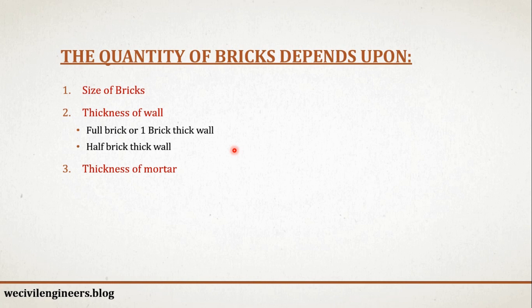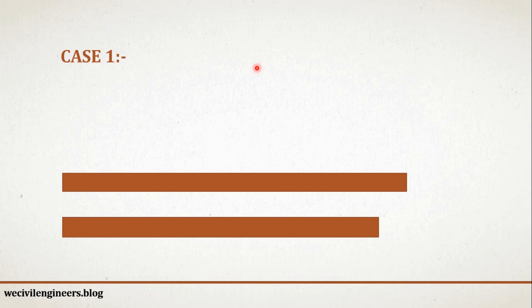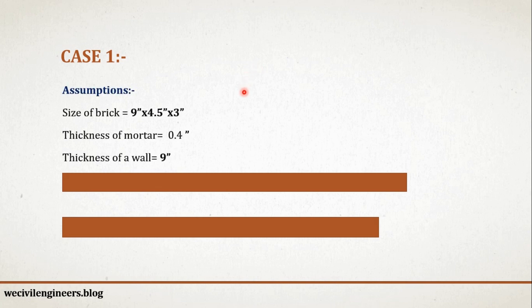Thickness of wall can be full brick thick or half brick thick. In this lecture, I am considering two cases. In case 1, I am taking the size of brick as 9 inch by 4.5 inch by 3 inch. And in case 2, I am taking the size of brick as 8 inch by 4 inch by 4 inch. Let's see the calculation for case 1 first, then we will go to case 2.